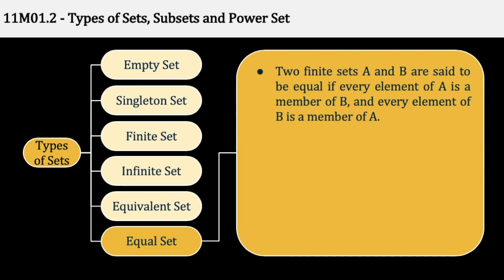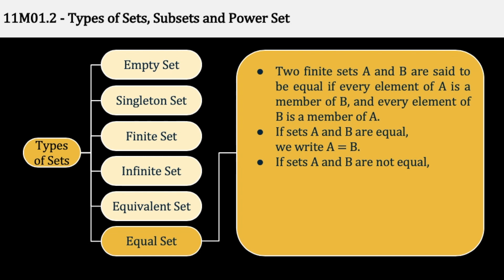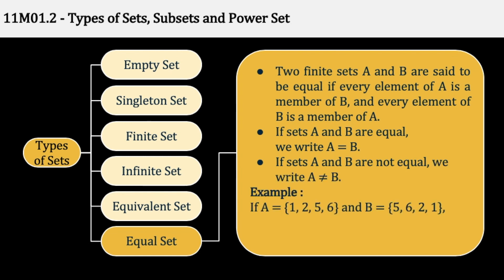Equal sets: two finite sets A and B are said to be equal if every element of A is a member of B and every element of B is a member of A. उन दोनों sets में same elements होने चाहिए, same number of elements होने चाहिए — of course तब ही वो equal sets होते हैं। If sets A and B are equal, then we write A = B; if not equal, we write A ≠ B। Example: {1, 2, 5, 6} = {5, 6, 2, 1} — यह दोनों equal sets हैं क्योंकि set में order of elements matter नहीं करता।